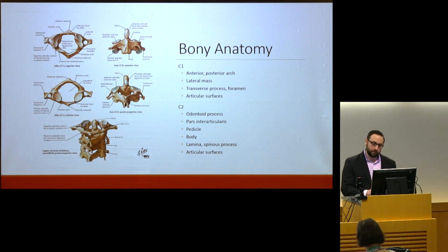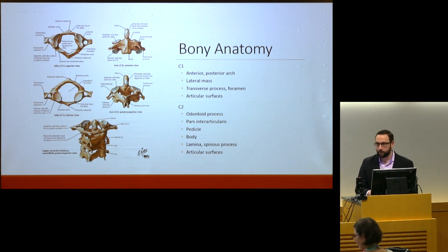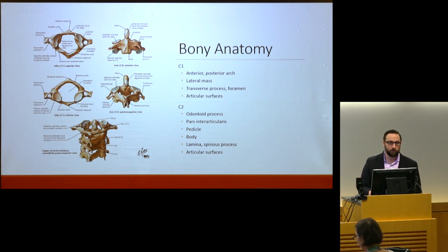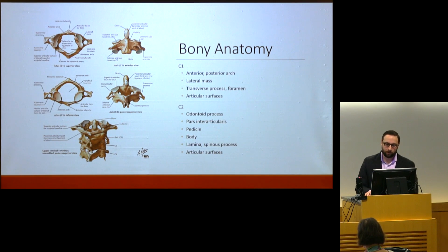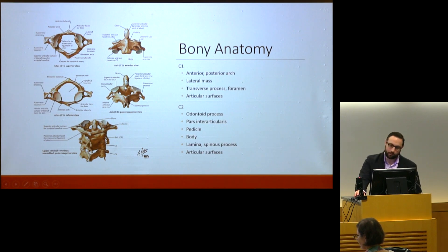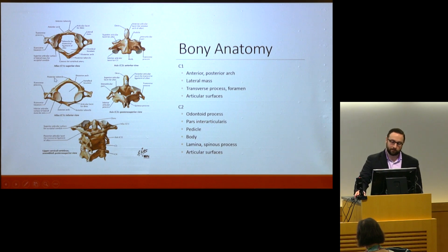In terms of the bony anatomy of the cranial cervical junction, this is a complex region. The top of the spine is unlike any other portion — the C1 and C2 bones have very unique anatomy, very different from the bones below. One unique aspect is the articulations between the first and second bones, which have a lot of motion. The C2 bone has a little peg called the dens that articulates with the first bone.